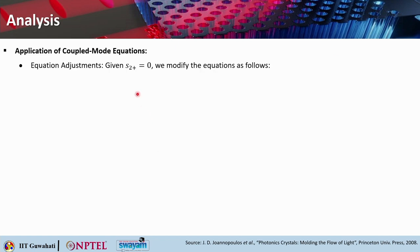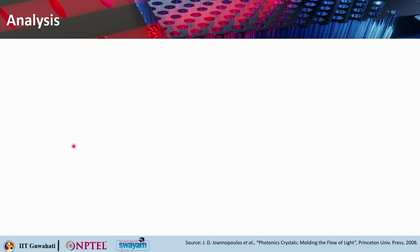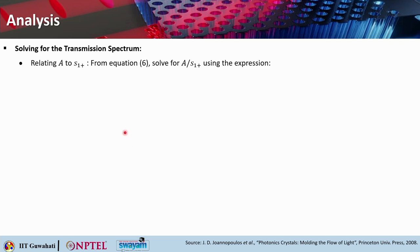Applying the coupled mode equations with S2+ = 0, the equation becomes: −i*omega*A = −i*omega_0*A − A/tau_1 − A/tau_2 + sqrt(2/tau_1)*S1+. The reflected field in waveguide 1 is: S1− = −S1+ + sqrt(2/tau_1)*A. The output S2− = sqrt(2/tau_2)*A. These are equations 6, 7, and 8 that tell you the transmission characteristics.